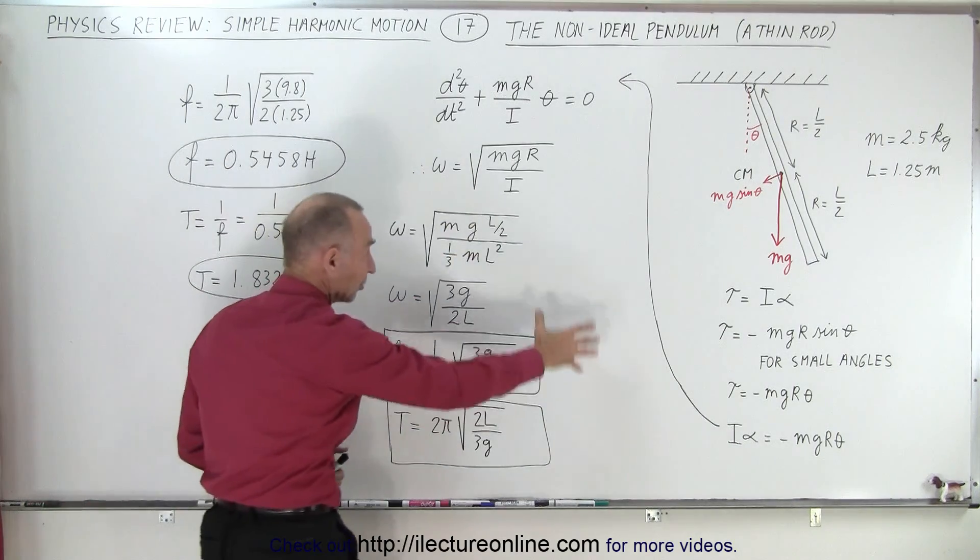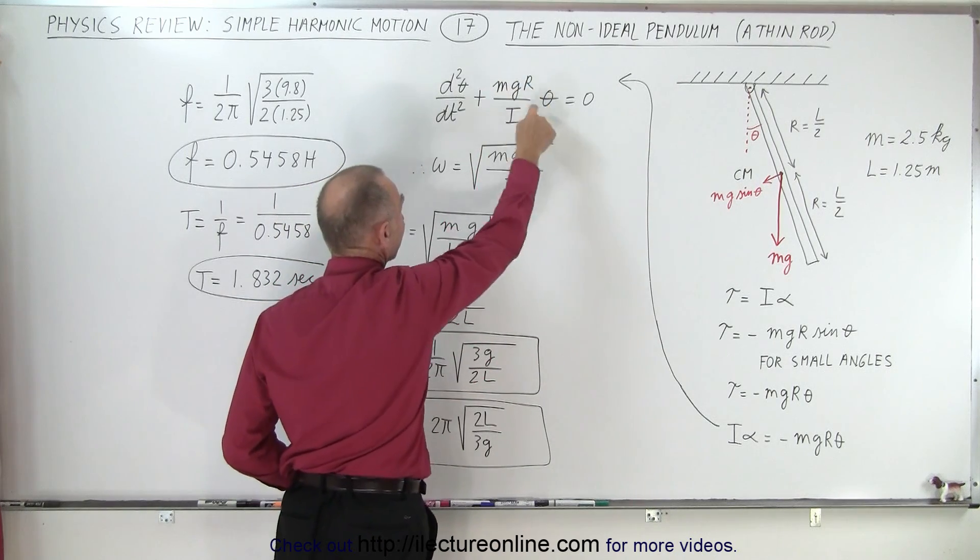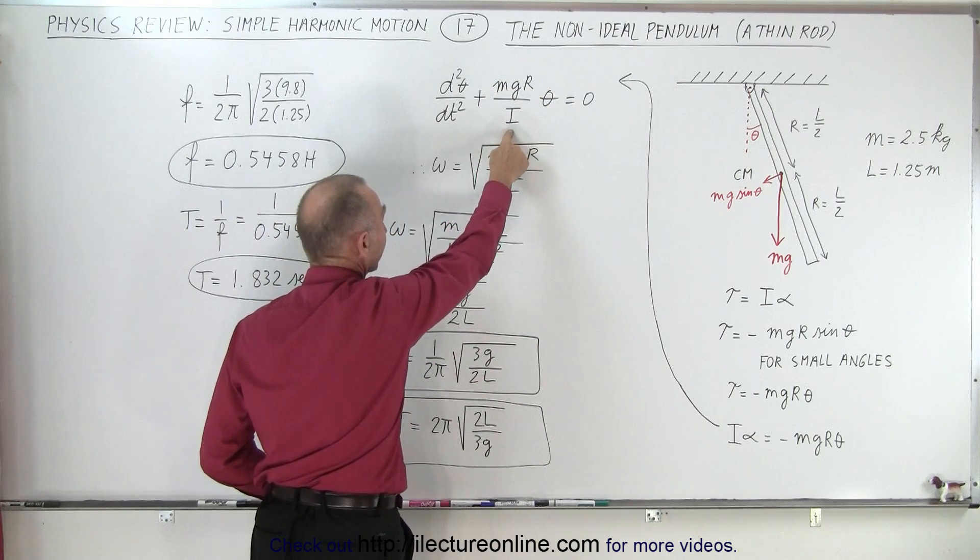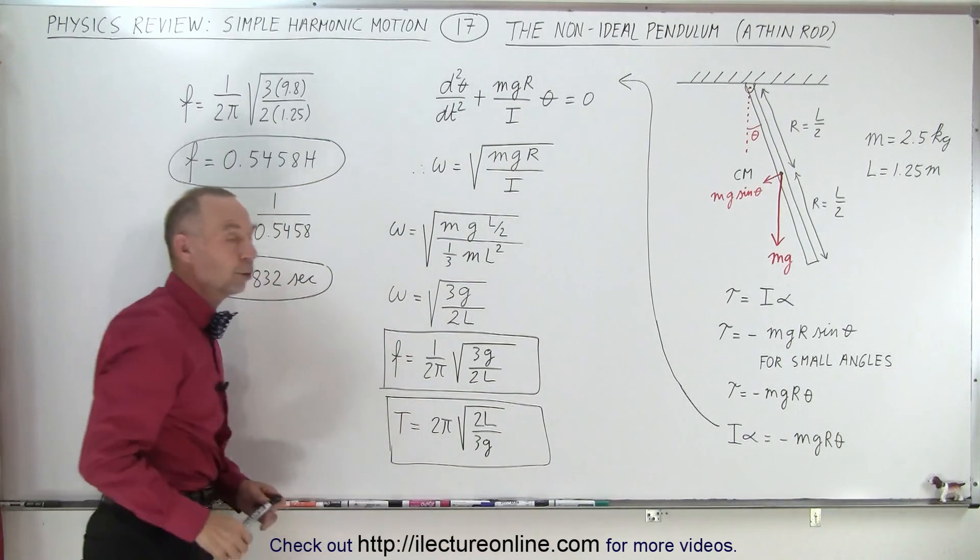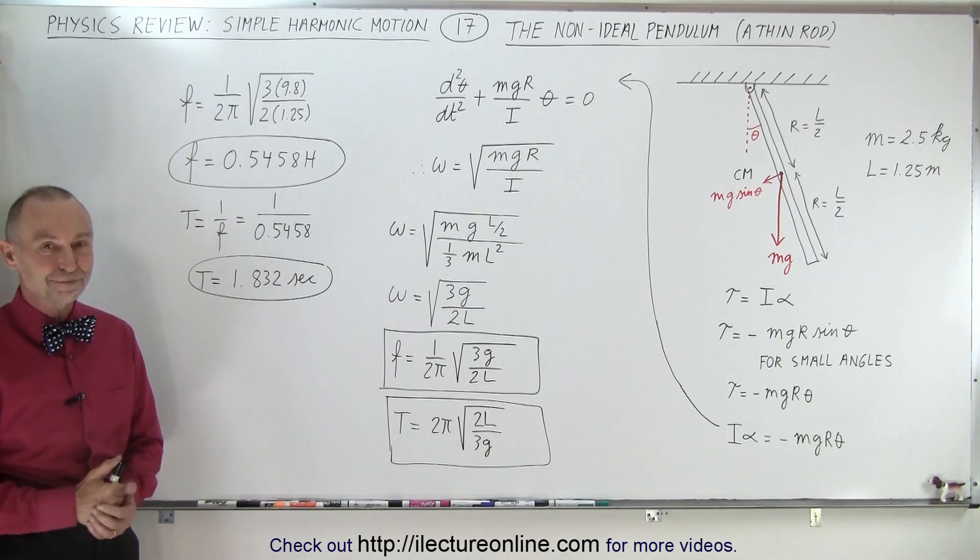Again, you don't have to go through this derivation. You can see where it came from. Simply recognize that this constant right here is mg r over the moment of inertia, which is equal to omega squared. And from there, the rest is pretty straightforward. And that is how it's done.